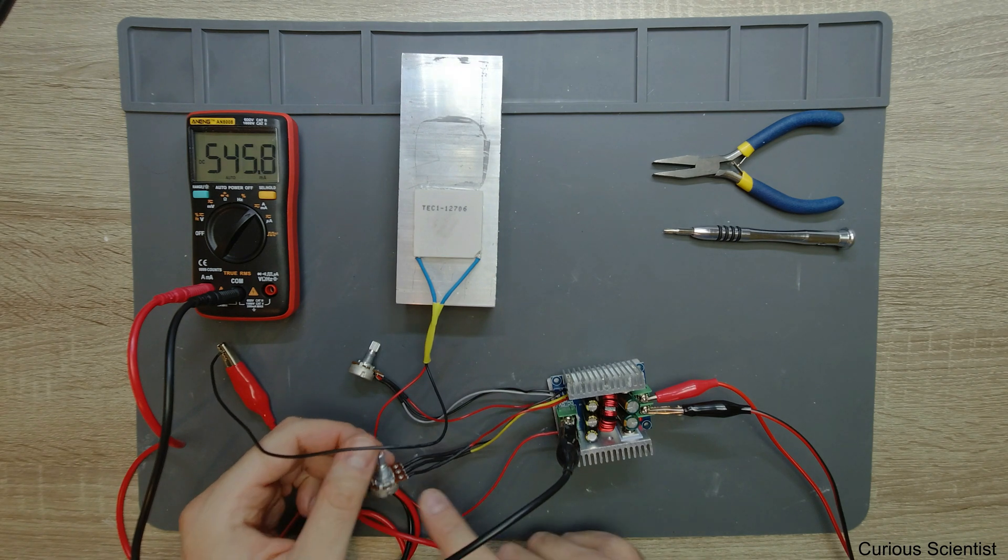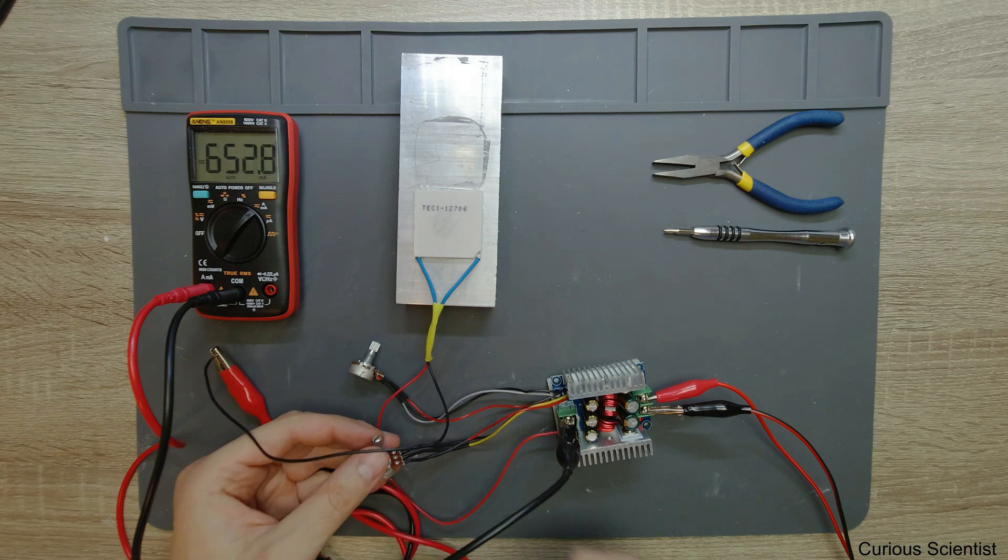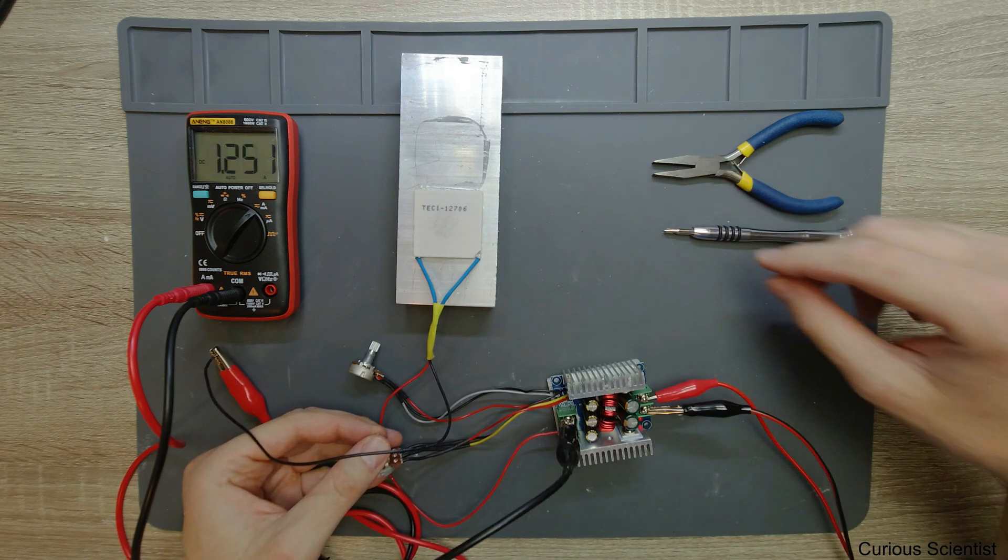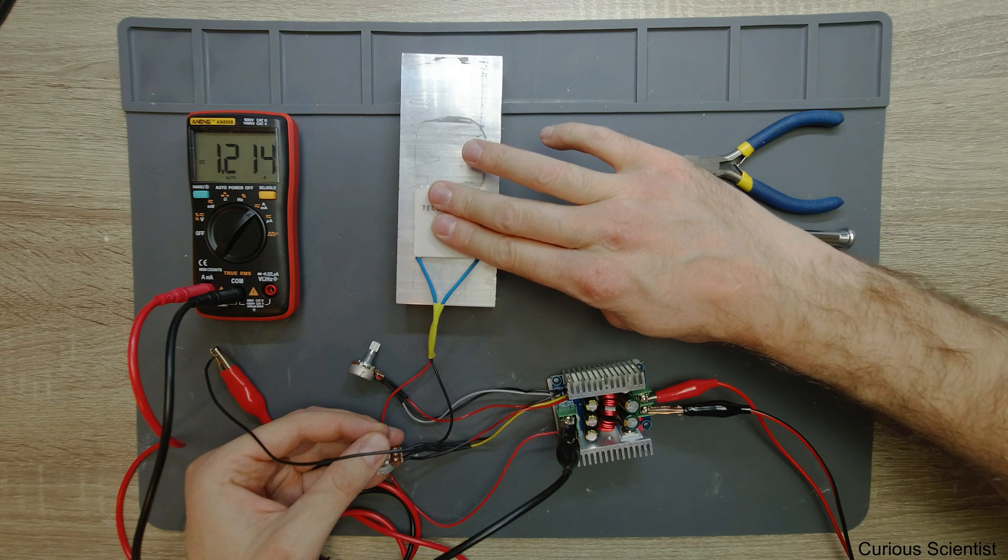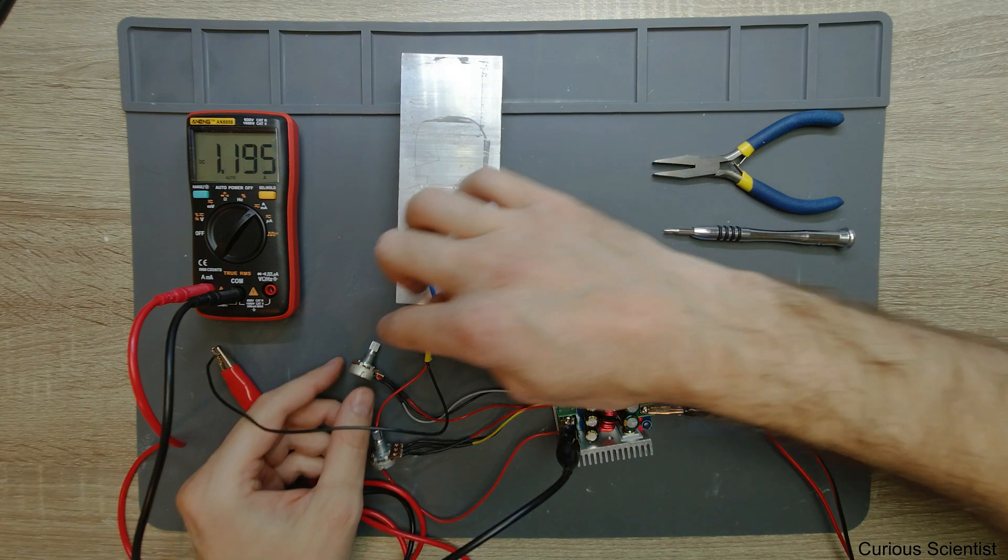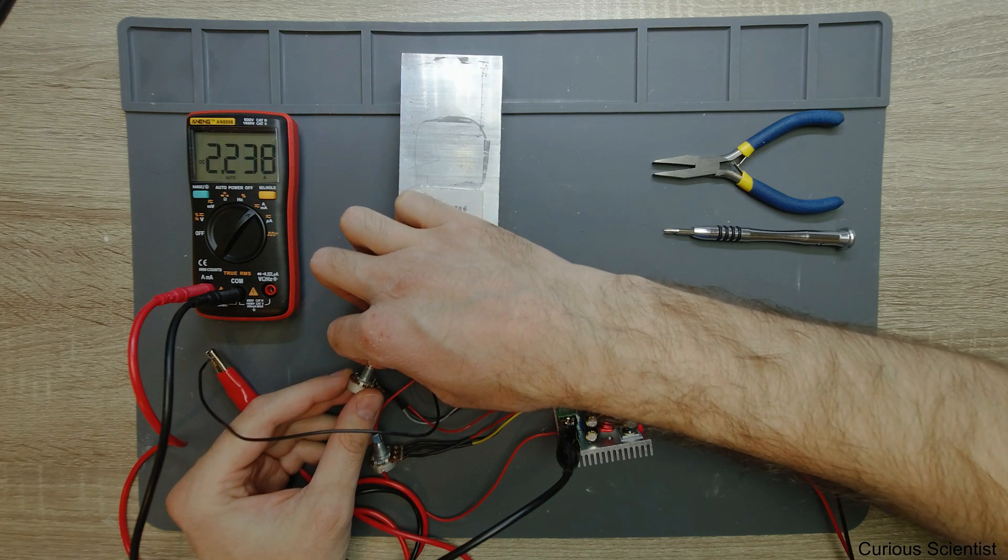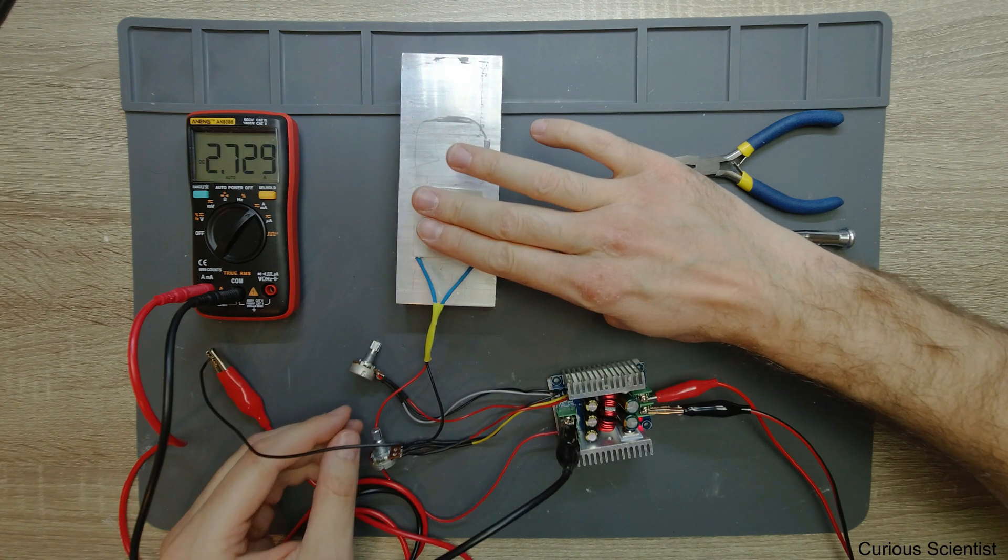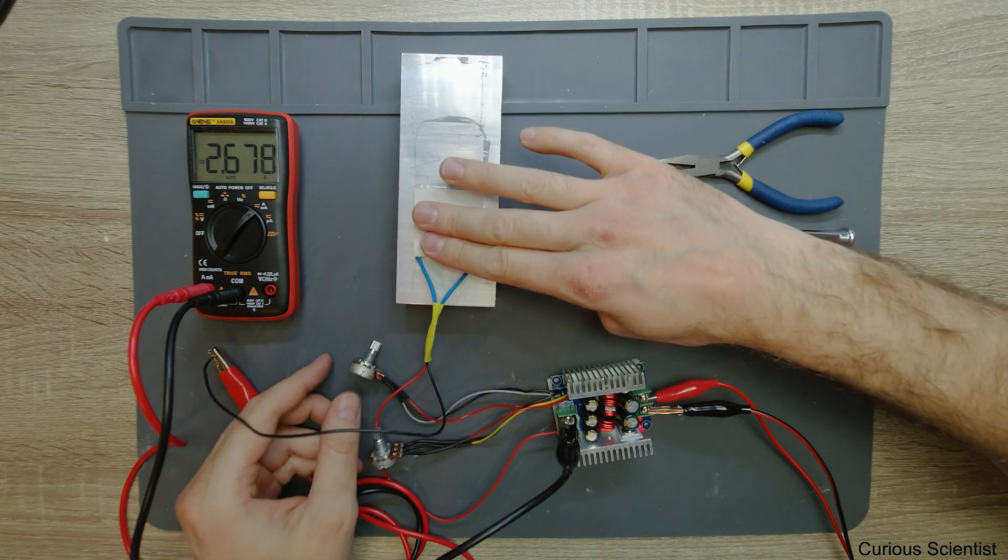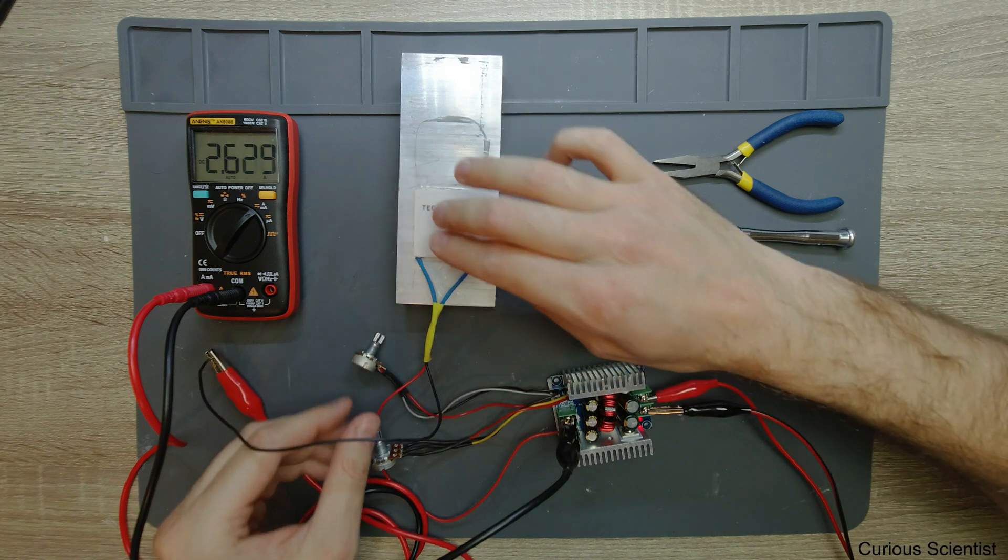Now I just increase the current and see what happens. I started to turn and you can see I'm trying to turn it slowly. Now it's 1.2 amps. Now we need to turn the voltage as well because that's also on the minimum. You can see now 2.7, this is getting very cold and I guess I can go up to 6.